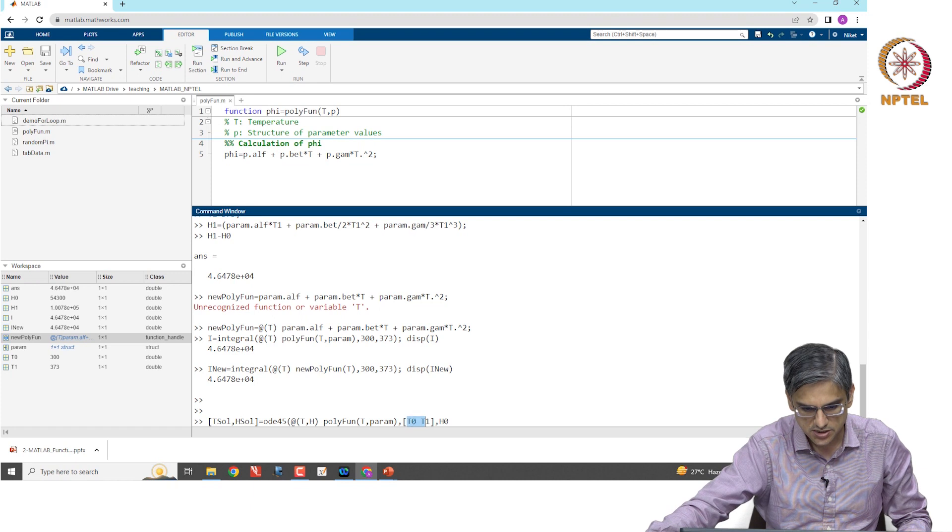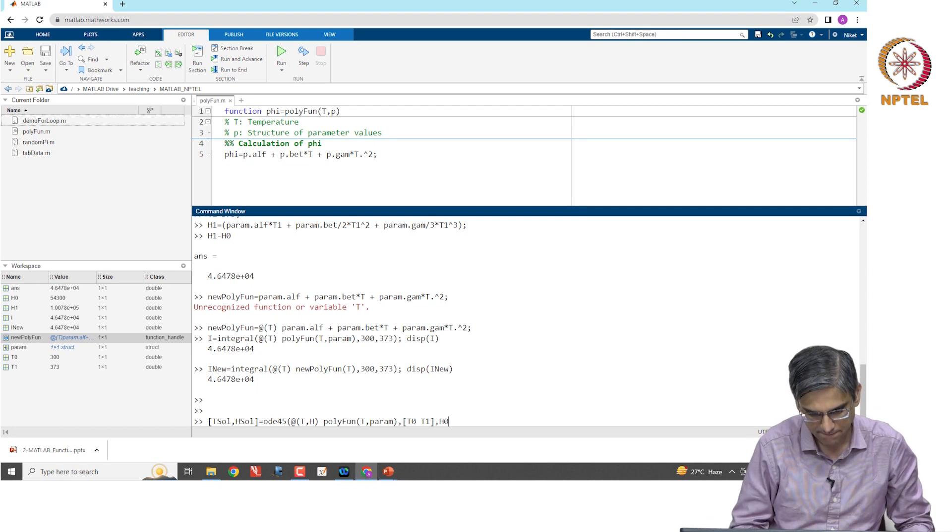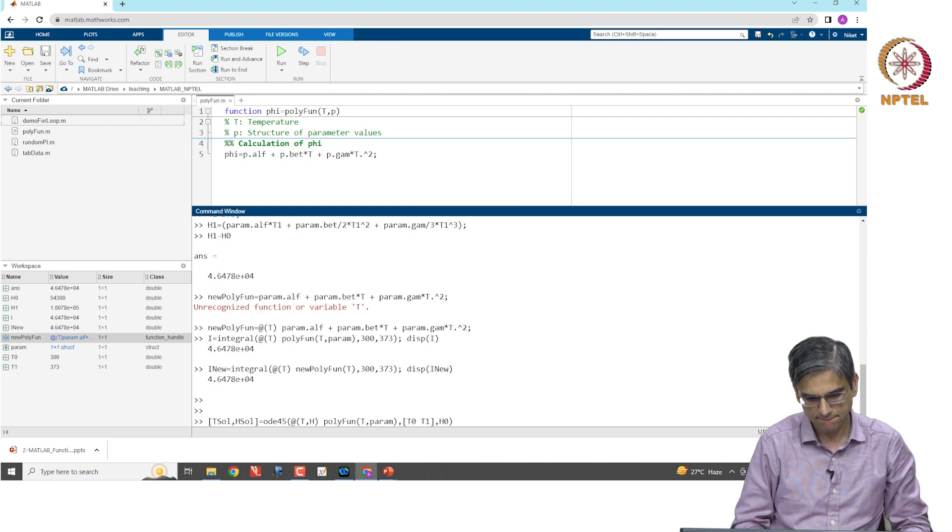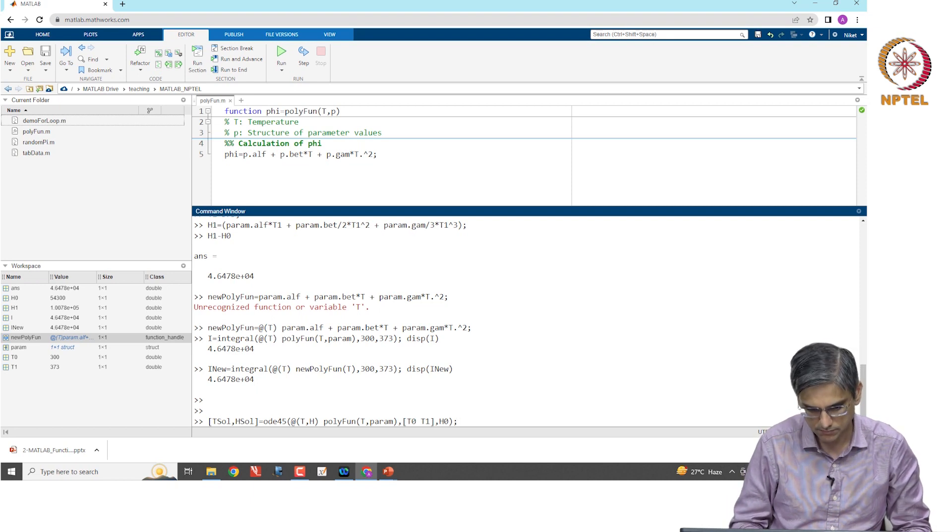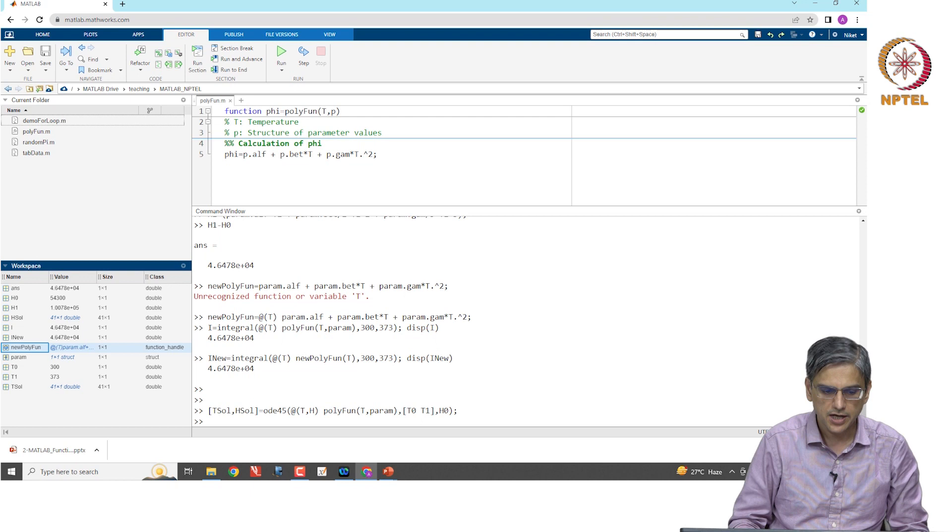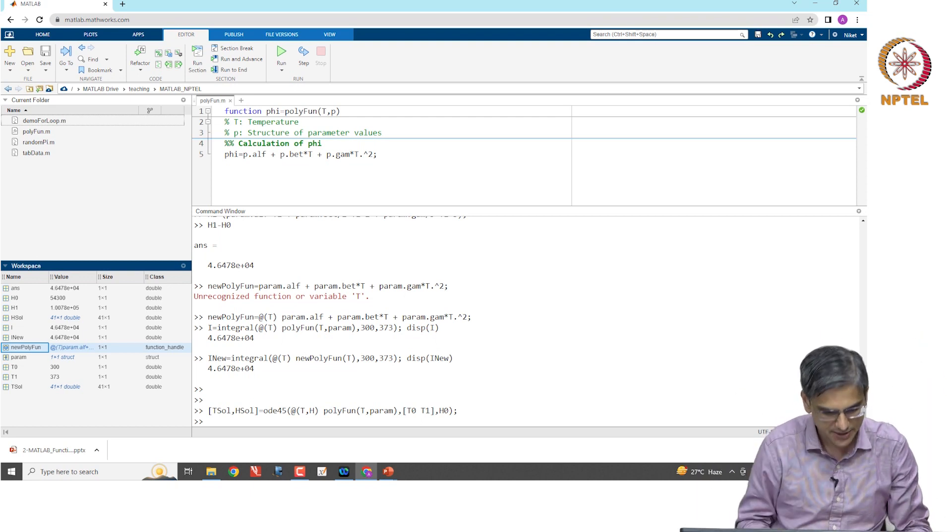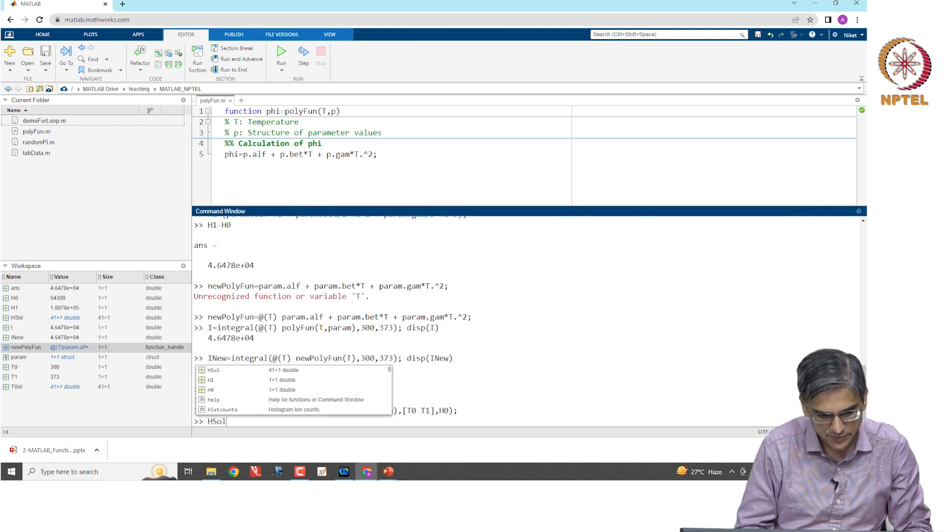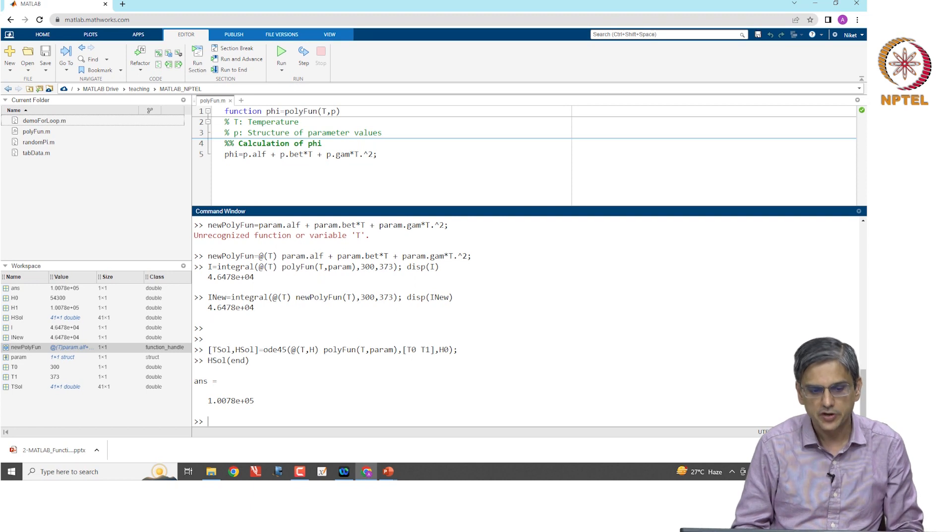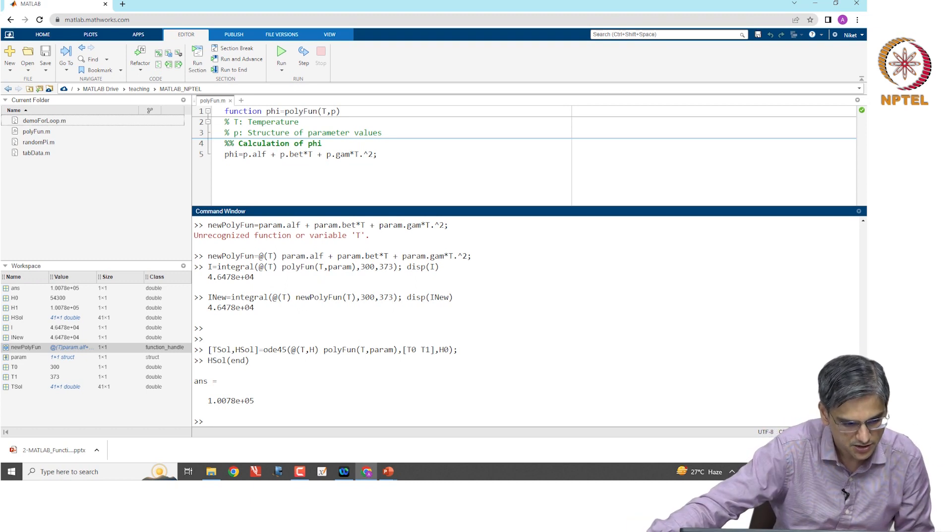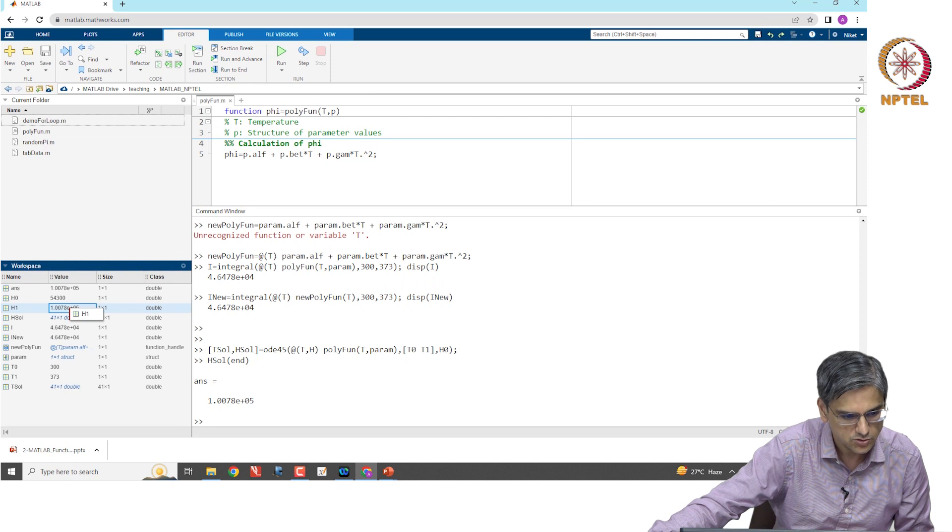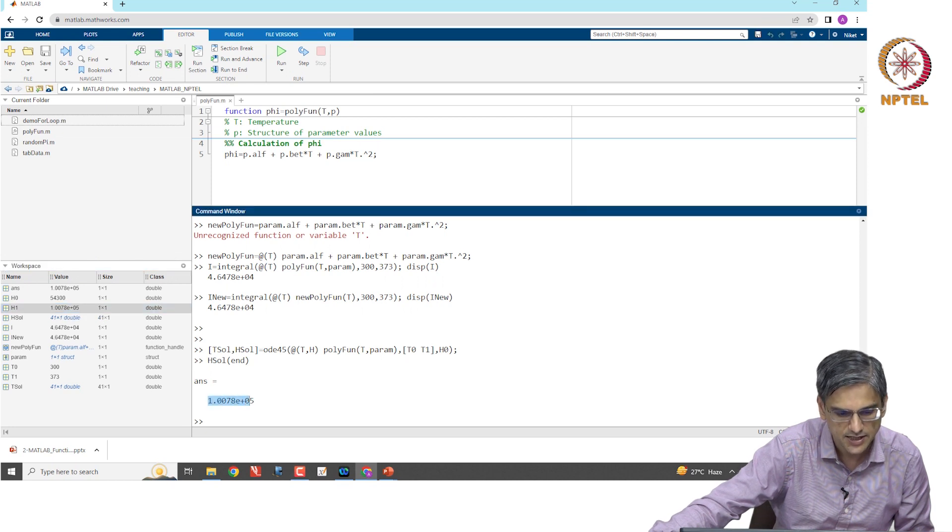Therefore, this is the limits t0 to t1, this is our h0, and this is what we are going to pass on. This is solved and I get the entire range of tsol and entire range of hsol. The value of h1 is going to be hsol(end). Now, this is the value of h1. The h1 that is over here and h1 that is obtained at the end are exactly the same.